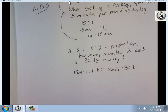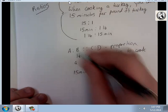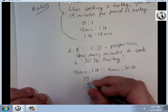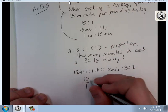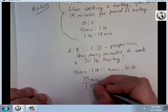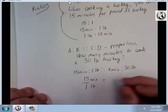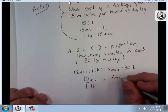But that's really icky looking. It's tough to manipulate. So how else do I write this? I can write these both as fractions. 15 over 1, 15 minutes over 1 pound equals x minutes over 30 pounds.